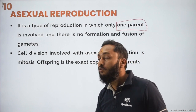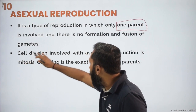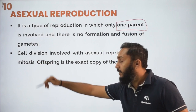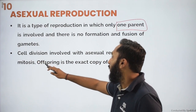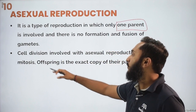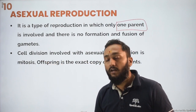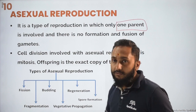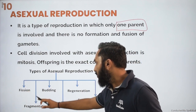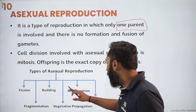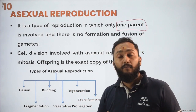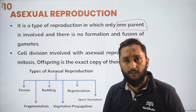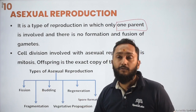If there is no gamete formation, it means no fertilization will take place. Cell division is involved in the process of asexual reproduction — specifically mitosis. So the new generation that is going to take birth does so because of cellular division only. This can be of several different types: fission, fragmentation, budding, vegetative propagation, regeneration, and spore formation, because different organisms belong to different habitats and show these different types of asexual reproduction.